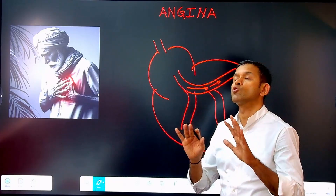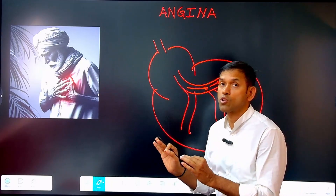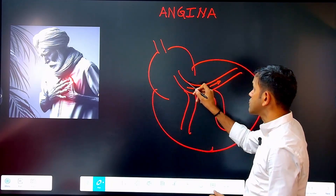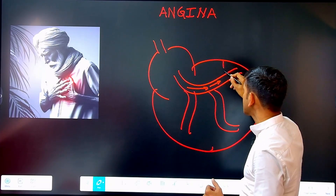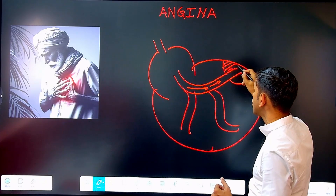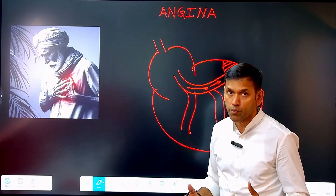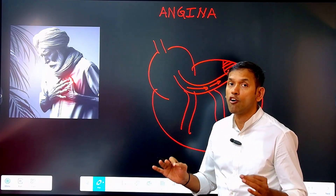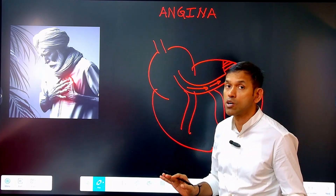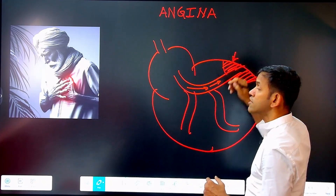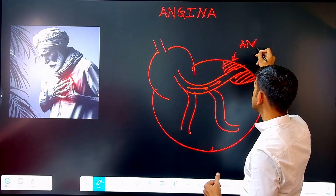There could be many forces which reduce blood supply to the myocardium. Whatever the reason, if the blood supply passing through the coronary artery doesn't reach that part of the myocardium, that part of the myocardium dies due to ischemia. Ischemia is nothing but lack of blood supply. If this part of the heart muscle doesn't receive a good amount of blood supply, it will start crying out in pain, and this pain is called angina.